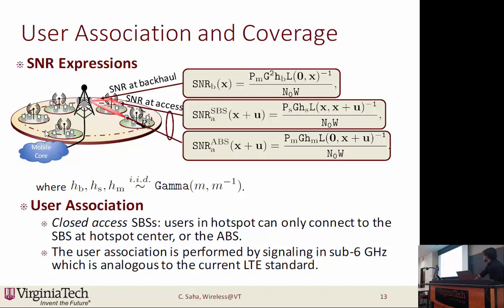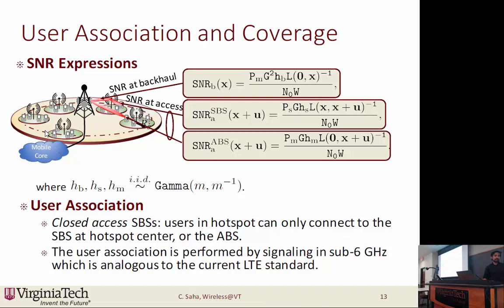We consider three different SNR expressions important for our analysis: one related to the backhaul link at the SBS location, and two related to access links — one between the SBS and the user, and one between the user and the ABS. Fading is modeled as IID Nakagami fading. For user association, all small cell base stations operate in closed access: if a user belongs to one hotspot, it can only connect to the SBS at that hotspot center; otherwise it connects to the ABS.